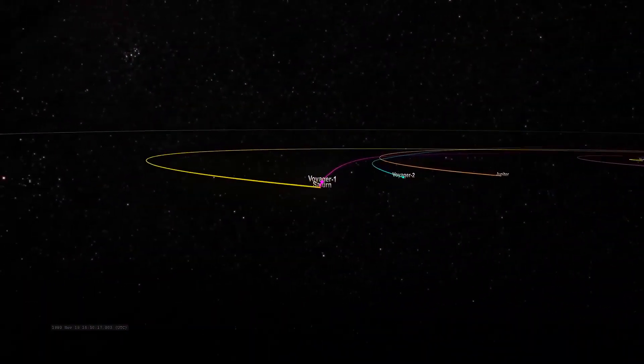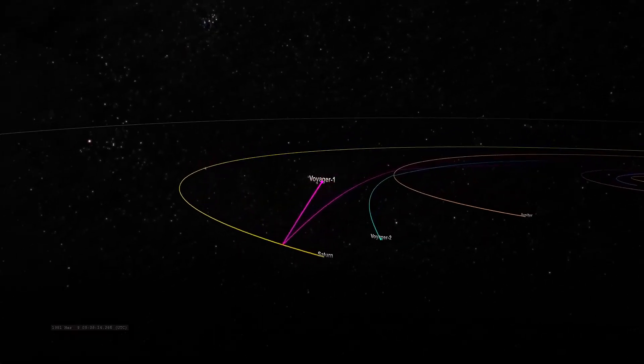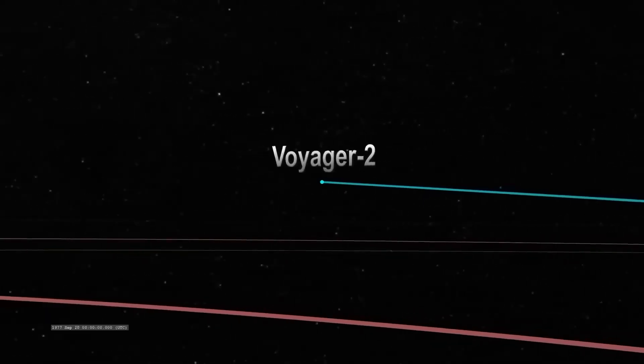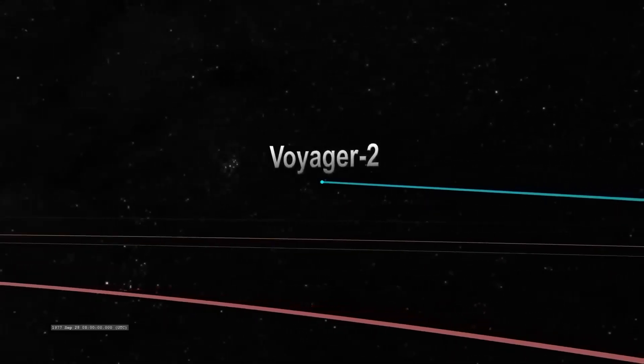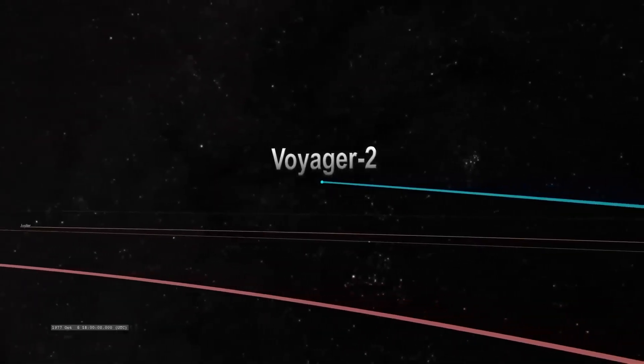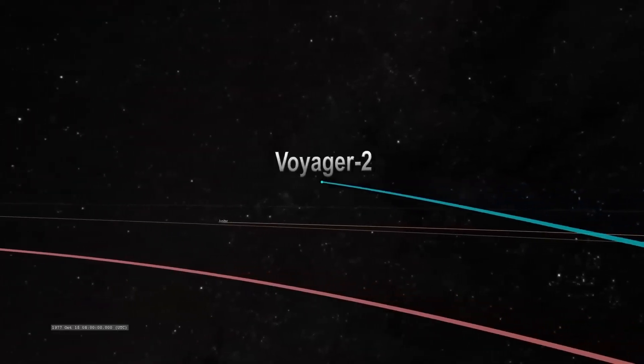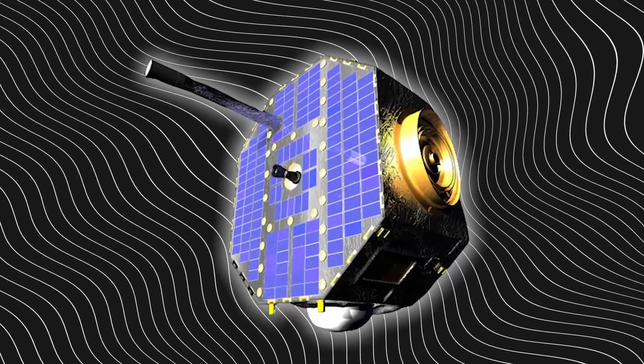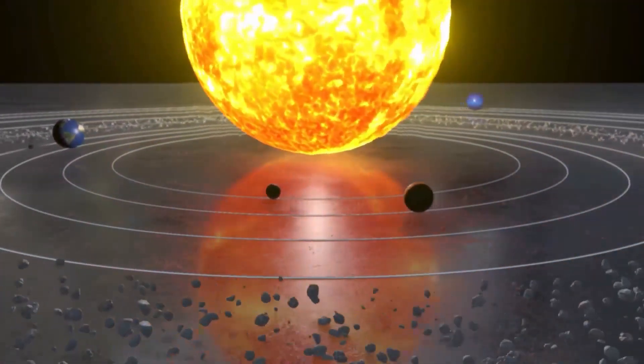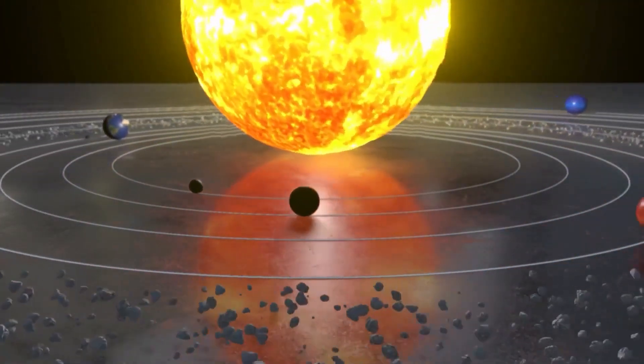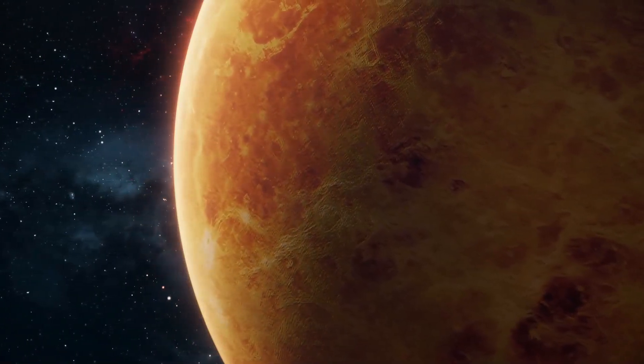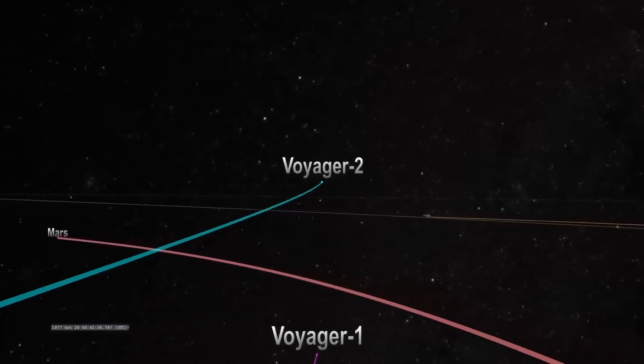Voyager 1 and Voyager 2 have provided unique direct measurements of the heliopause's location, but these measurements are limited to just one point in space and time. To get a more comprehensive picture, researchers relied on data from IBEX, which complements the information from the Voyager spacecraft. By analyzing data from these sources, scientists can create models that predict how the heliopause might change in the future.